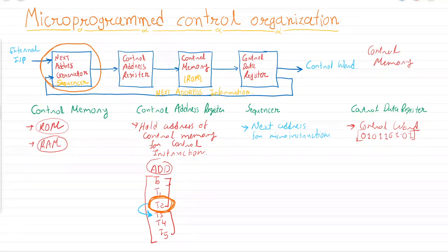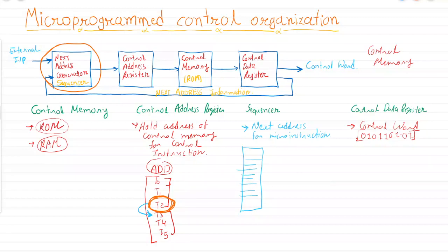Whatever instruction is specified, the corresponding micro instructions are stored in control memory. The role of the sequencer is to fetch each micro instruction and execute them linearly. Let us understand the various scenarios where the sequencer comes into the picture. During normal instruction execution in a computer, we follow linear execution, meaning the program counter increments by PC plus one.